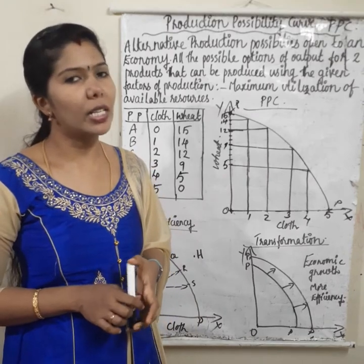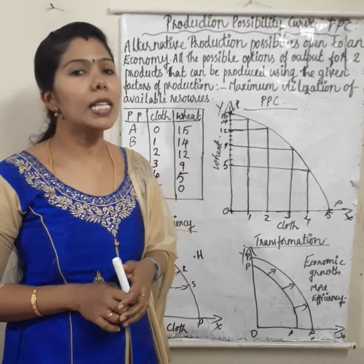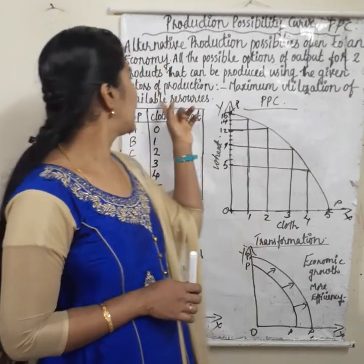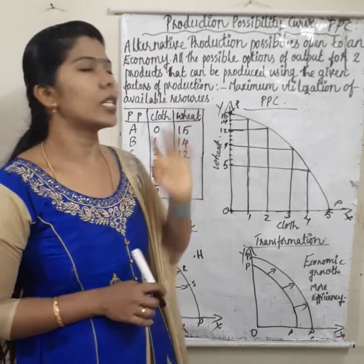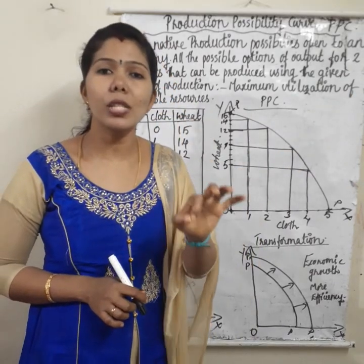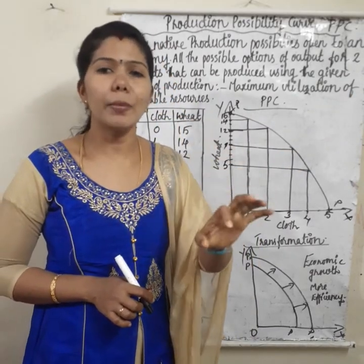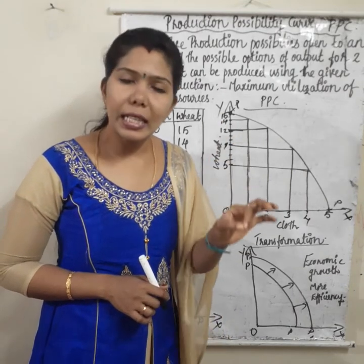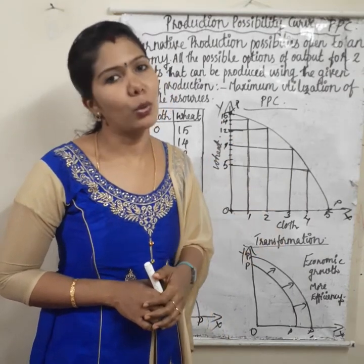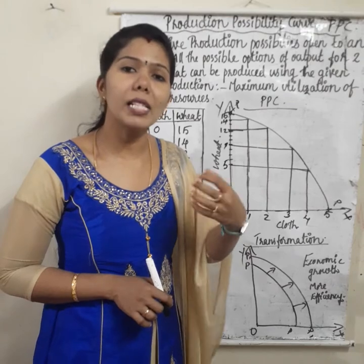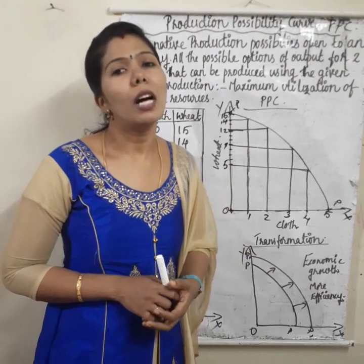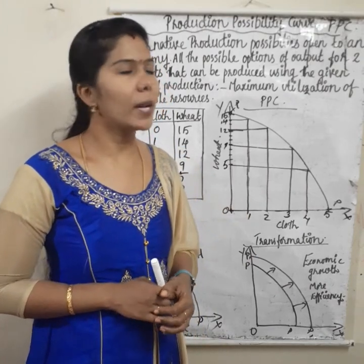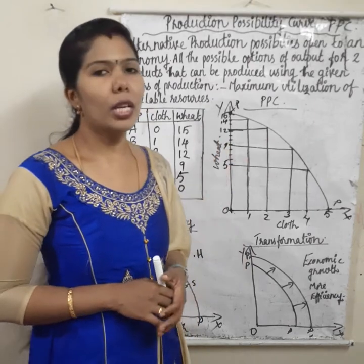One important thing here is the maximum utilization of available resources. We have to use our resources in an efficient manner so we can attain economic growth and produce the maximum amount of output. That is the production possibility curve.